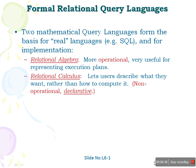Relational algebra describes a step-by-step procedure for how to compute the desired results. When it comes to relational calculus, it allows users to describe what output they require rather than how to compute it. That's why we call it a non-procedural or declarative language. Relational calculus has two more flavors: tuple relational calculus and domain relational calculus, which we will discuss in later presentations.